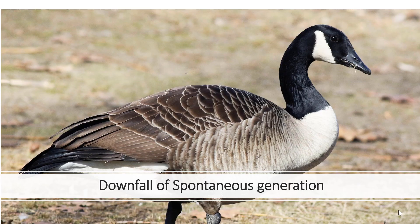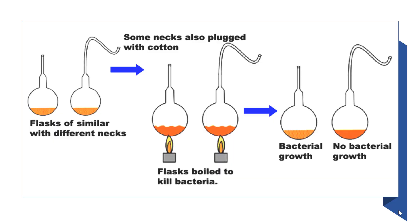First we'll talk about the downfall of spontaneous generation. In the past, it was believed that living things originated from non-living things. It was also believed that bacteria are very small particles, and therefore don't need any living things to produce — meaning bacteria were thought to reproduce from dust.